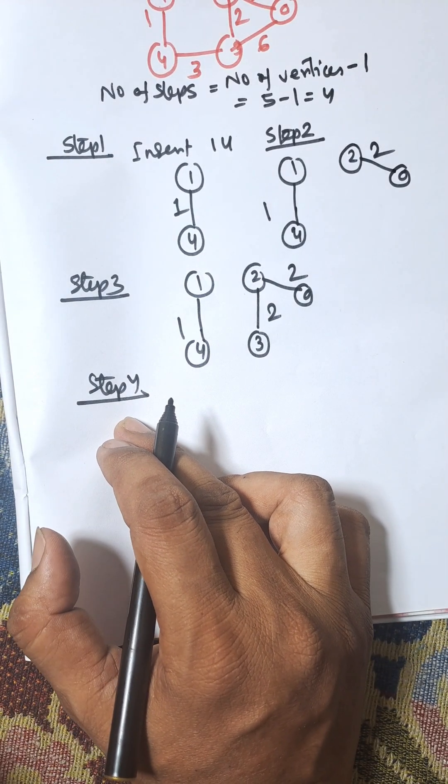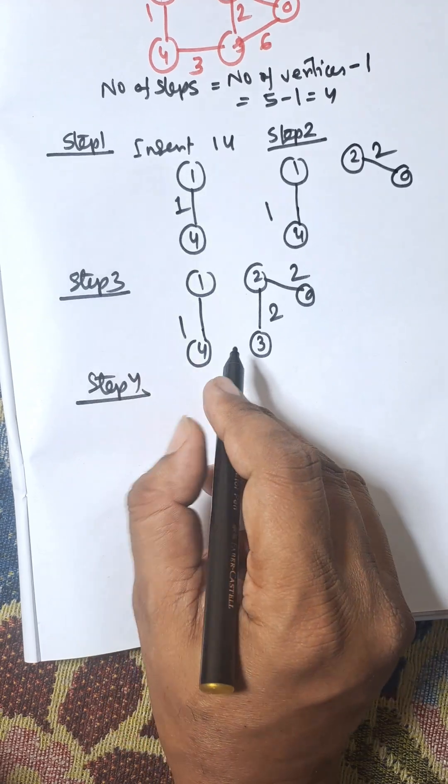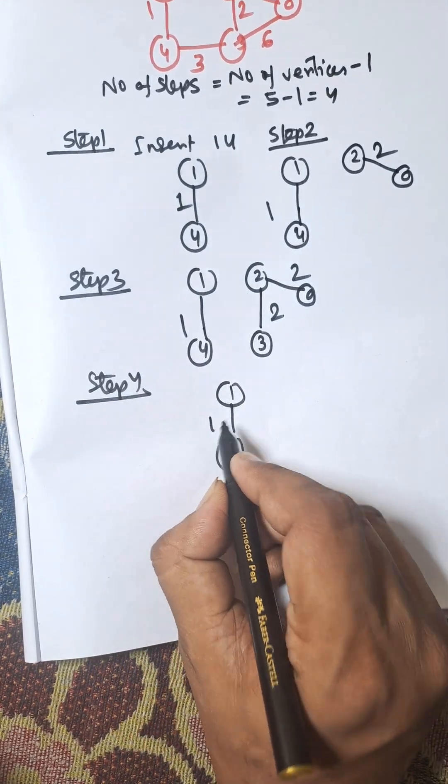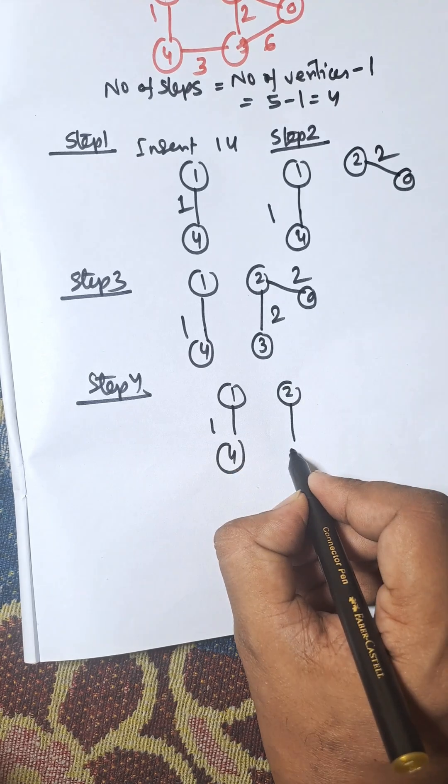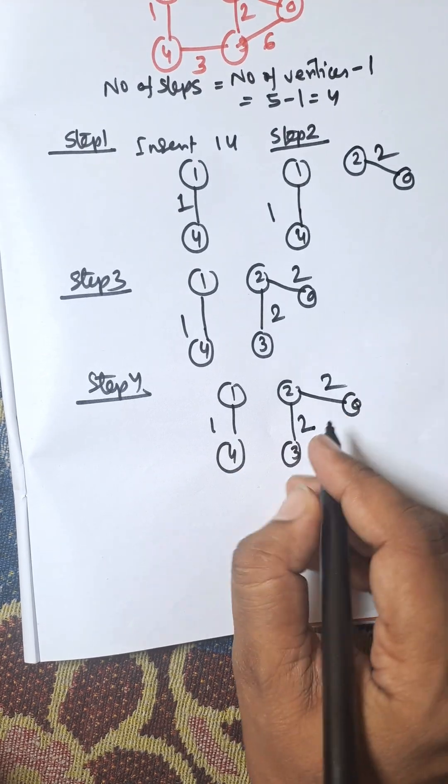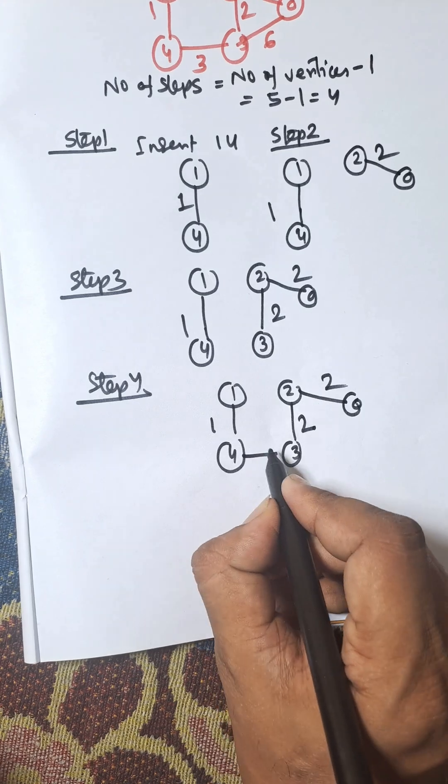We will select edge 4-3. So we have: 1-4 with cost 1, 2-3 with cost 2, 2-0 with cost 2, and 4-3 with cost 3.